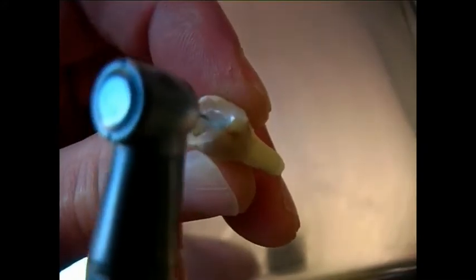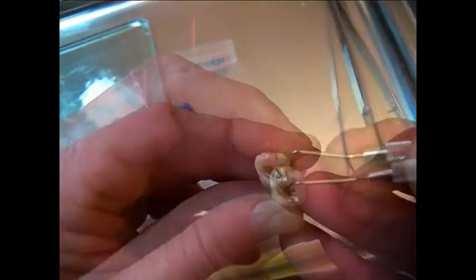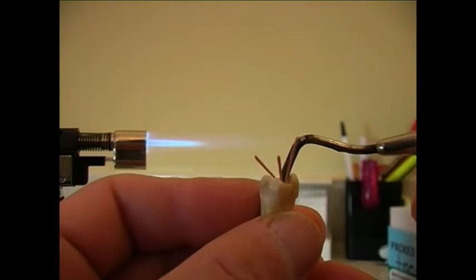Slow setting cements are spun down the canals. Gutta-percha points are inserted next. They're packed in tightly to try to completely seal the canal. Supposedly this will stop bacteria from getting into the tooth and reinfecting it.